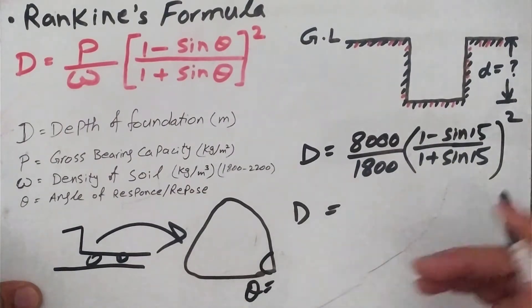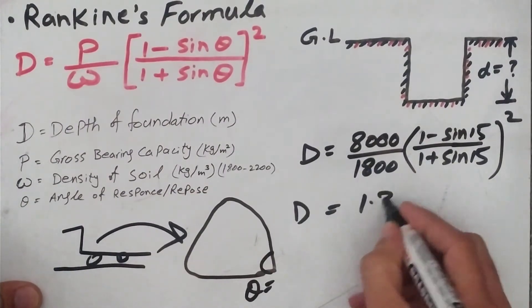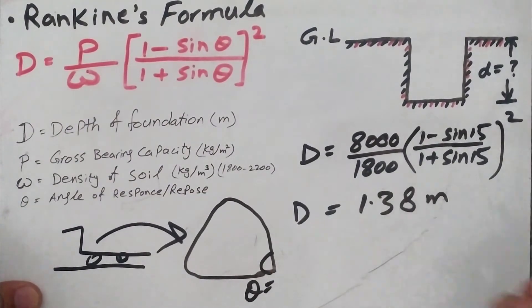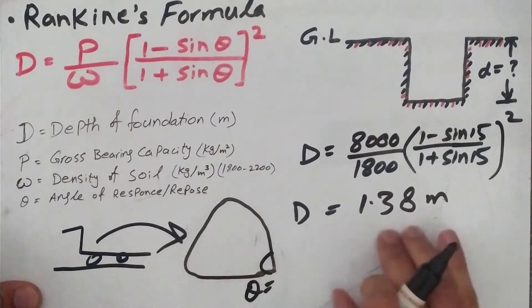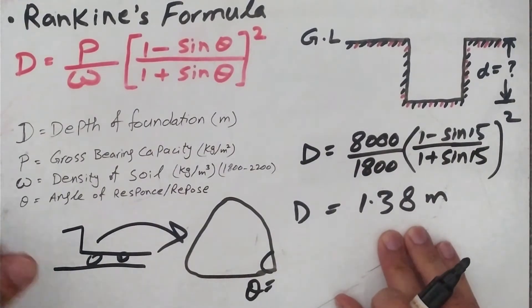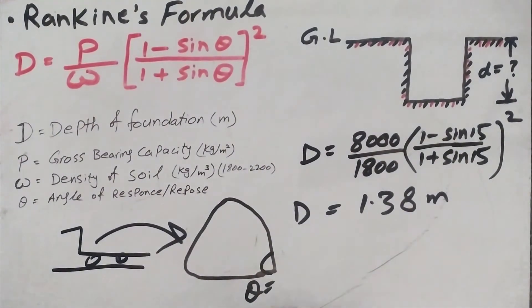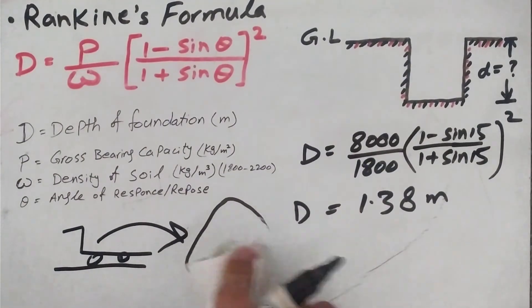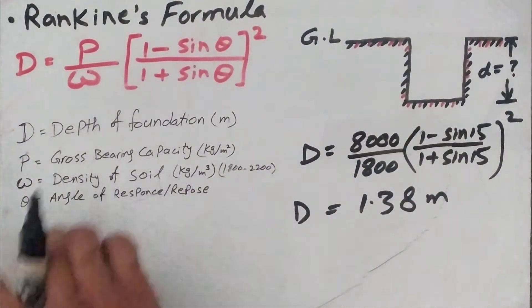Then we will get 1.38 meters. So this is the depth of our foundation which we have to calculate before constructing any building. Now, in order to find out the depth, there are some ISO standards.